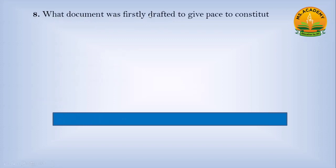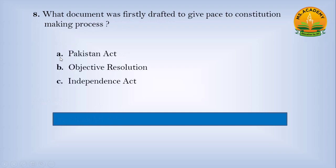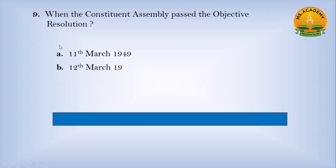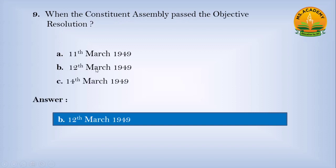What document was firstly drafted to give pace to the constitution-making process? Option A, Pakistan Act; Option B, Objective Resolution; Option C, Independence Act. Answer: B — Objective Resolution. When did the Constituent Assembly pass the Objective Resolution? Option A, 11th March 1949; Option B, 12th March 1949; Option C, 14th March 1949. Answer: B — 12th March 1949.